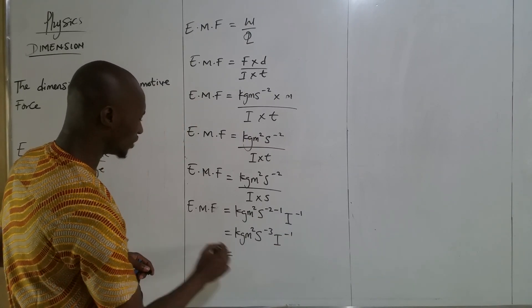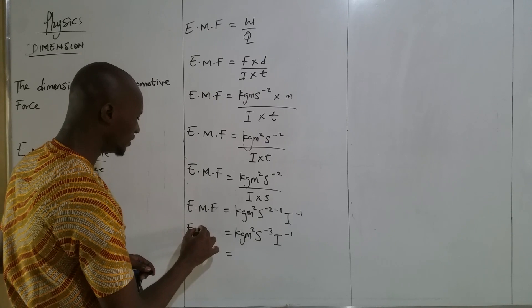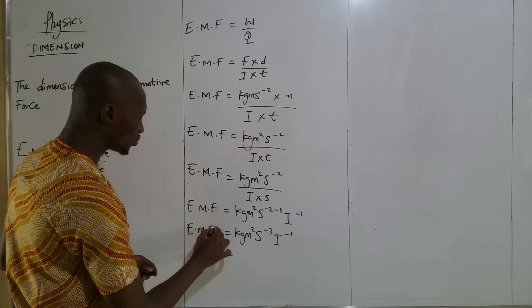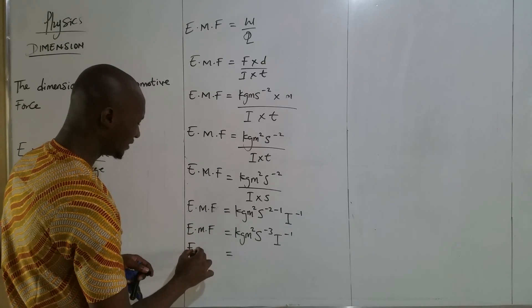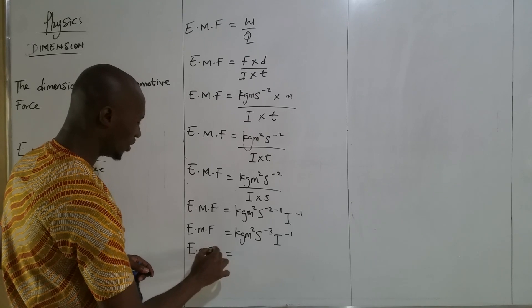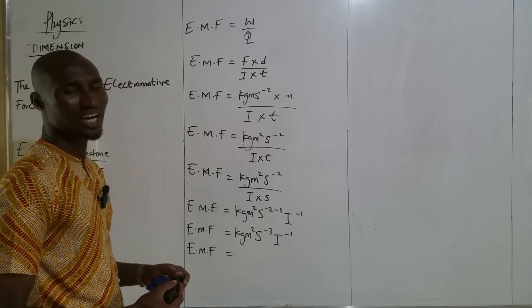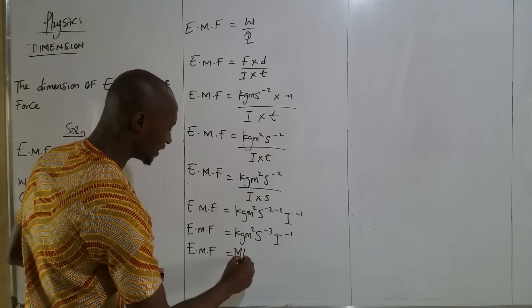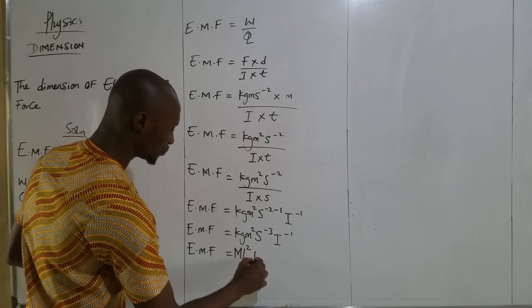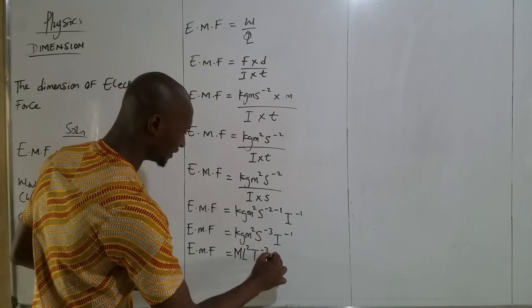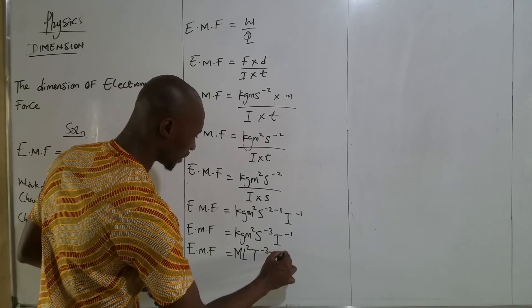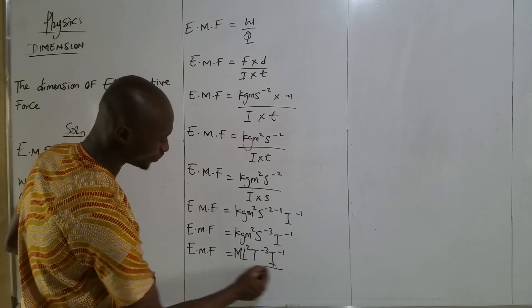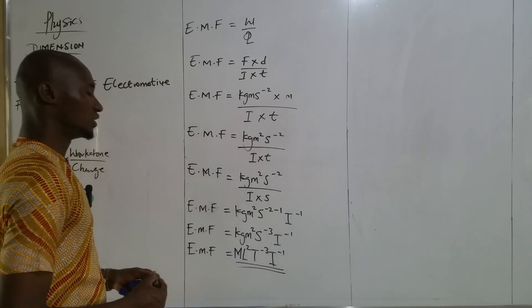Now, according to dimension, don't forget that dimension is the way in which physical quantities are related or associated to fundamental quantities. Now, kg is M. This is L². And this is T⁻³. And this is I⁻¹. This is dimension of electromotive force.